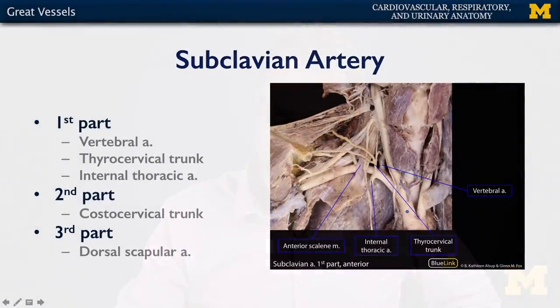Next, we have the subclavian artery. The right subclavian artery branches from the brachiocephalic trunk, while the left subclavian artery branches directly from the arch of the aorta. The subclavian artery is tripartite — there are three parts to it.